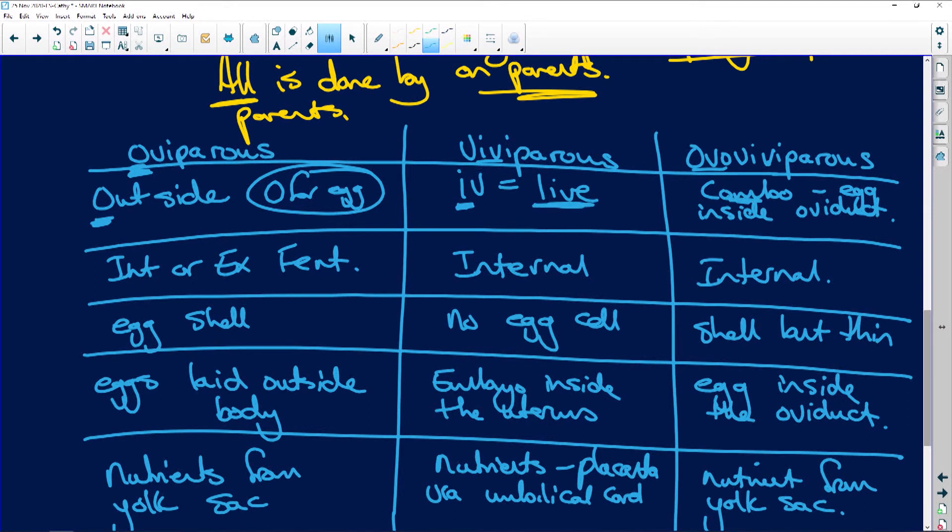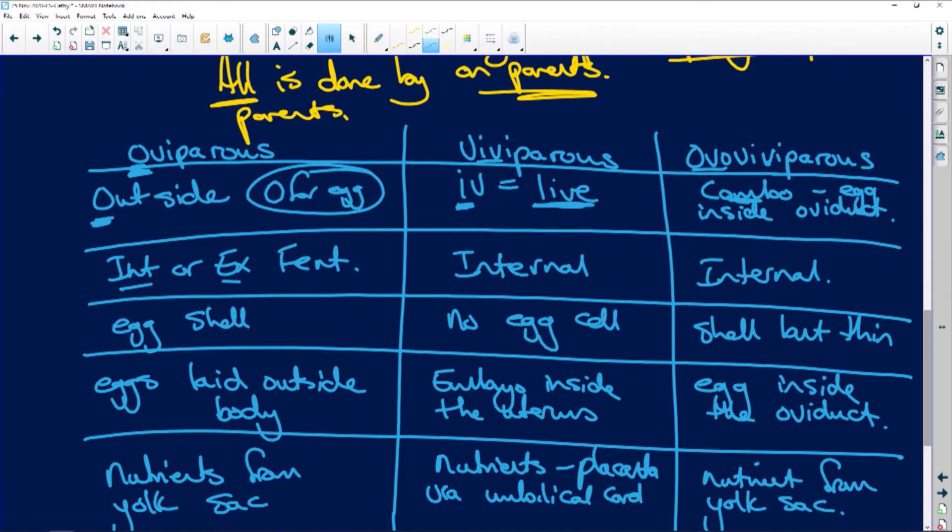Then ovoviviparous is a combination. So you have eggs that are laid inside an oviduct or in the case of a seahorse, the male keeps the eggs, the female lays the eggs in the male's little pouch and he then releases sperm into the pouch. So then clearly you're going to have external fertilization for the seahorse. But literally most of the time you're going to find oviparous is going to be internal or external fertilization, viviparous is always internal, and ovoviviparous is going to be internal.